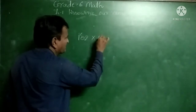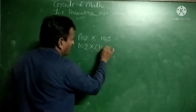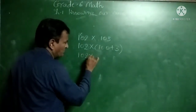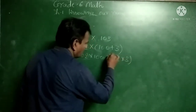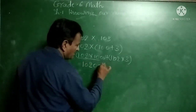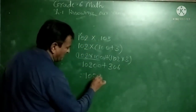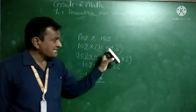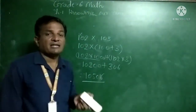One more example: 102 into 103. Here we simplify 103 as 100 plus 3, so we write 102 into 100 plus 102 into 3. That gives 10,200 plus 306, so 10,506 is our answer — without actual long multiplication. We use brackets to simplify the question easily.